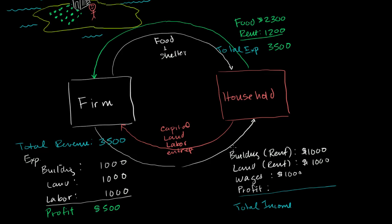And that's going to go to the owner of the firm, who happens to be this guy right over here. So the profit is $500, and so his total income is $3,500. And it's good that his income is at least $3,500 because that's how much he's spending per month.